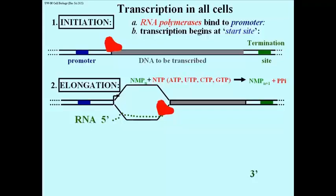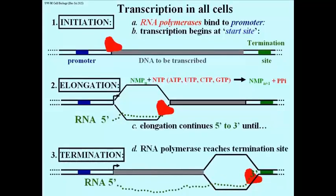Not shown here is the fact that water comes out of this reaction. Elongation then continues 5' to 3' until termination, at which point the RNA polymerase reaches a termination site and the RNA is freed. You should have seen in these animations that the DNA unwinds during transcription, but immediately behind the RNA being produced, the DNA rewinds.